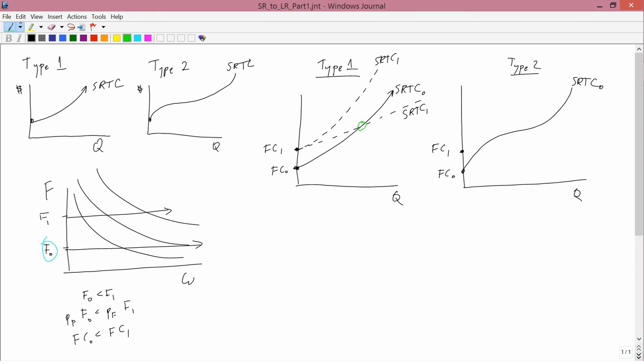We can talk about the same kind of situation in type 2. In type 2, it might look like this, SRTC1. But it might also look like this, SRTC1, so that you'd have this crossing point.